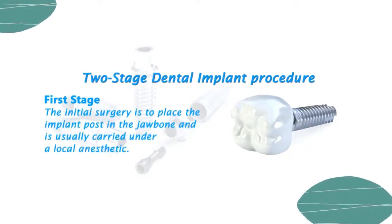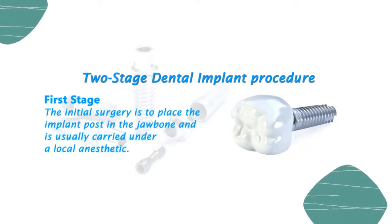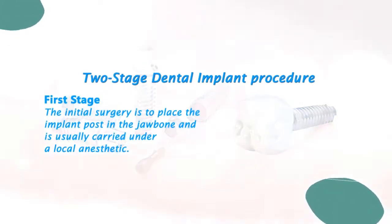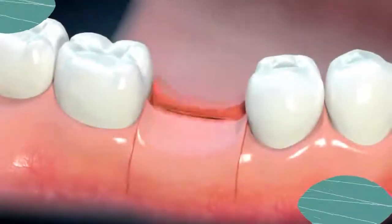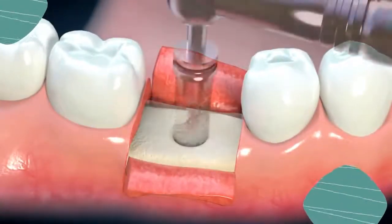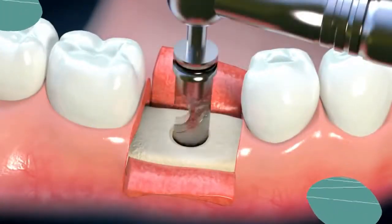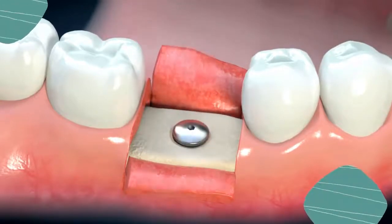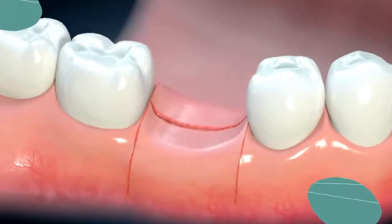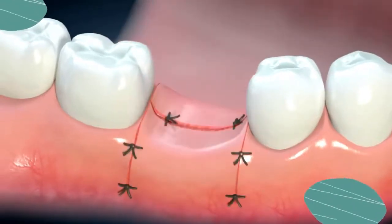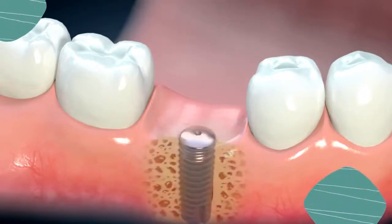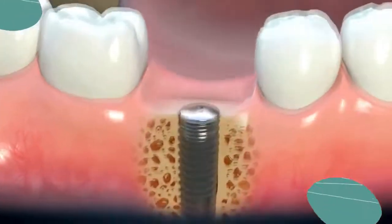The process for having dental implants involves two separate surgical procedures. The initial surgery is to place the implant post in the jawbone and is usually carried out under a local anesthetic. An incision is made in the gum tissue before a hole is precisely created, the implant is placed into the hole, and the gum is stitched shut. The site is left to heal so the implant post can integrate firmly with the jawbone.